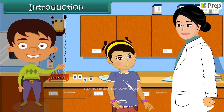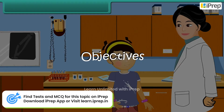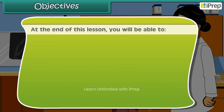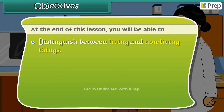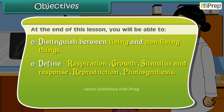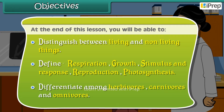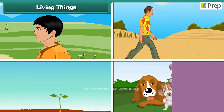You just saw Rashmi's first reaction to an external influence. In this lesson, you will learn more about living things and their characteristics. At the end of this lesson, you will be able to distinguish between living and non-living things, define respiration, growth, stimulus and response, reproduction, and photosynthesis, and differentiate among herbivorous, carnivorous, and omnivorous living things.